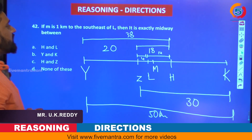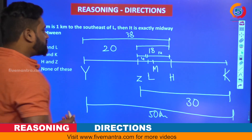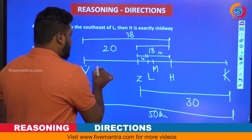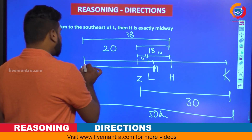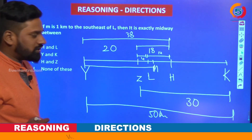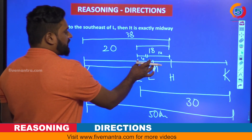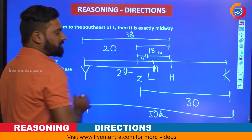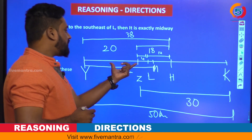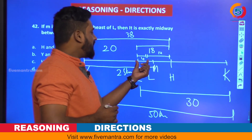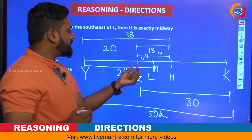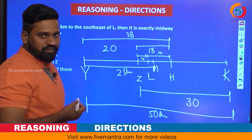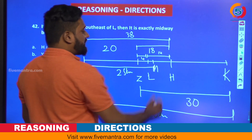Now it is asking: M is exactly midway between what? Observe the distance Y to M — from here to here, what is the distance? That is: up to Z it is 20, plus Z to L is 4, plus L to M is 1, so the total becomes 25 kilometers for Y to M.